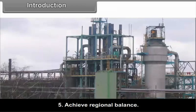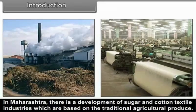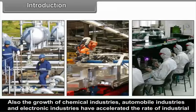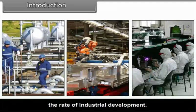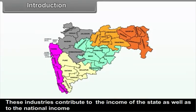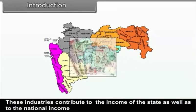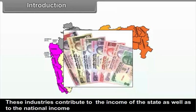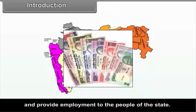To achieve regional balance, in Maharashtra there is development of sugar and cotton textile industries which are based on traditional agricultural produce. Also, the growth of chemical industries, automobile industries and electronic industries have accelerated the rate of industrial development. These industries contribute to the income of the state as well as to the national income and provide employment to the people of the state.